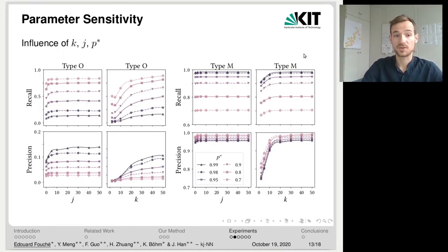First, we evaluate the performance of our approach with respect to its parameters. So the number of nearest documents k, the number of nearest phrases j, and P* that we use to set the entropy threshold. And here we show the recall and precision for both type O and type M outliers with respect to varying number of nearest phrases j and number of documents k. As we can see, both the precision and recall tend to increase as j and k increase, but it saturates after some point. So typically, k and j equal to 30 is enough to lead to very good recall and precision for both outlier types.